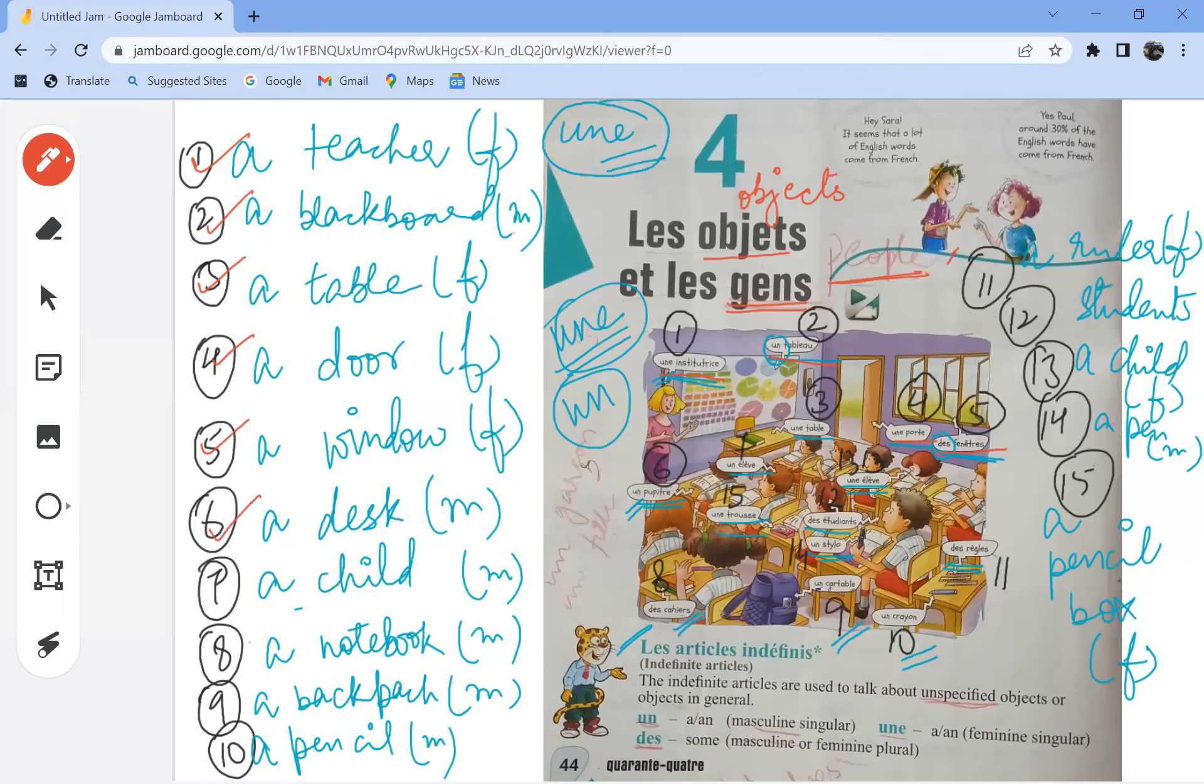Sixth, un pupitre is a desk. Un élève is a child male, masculine. Un cahier is a notebook. Un cartable is a backpack. Un crayon is a pencil.